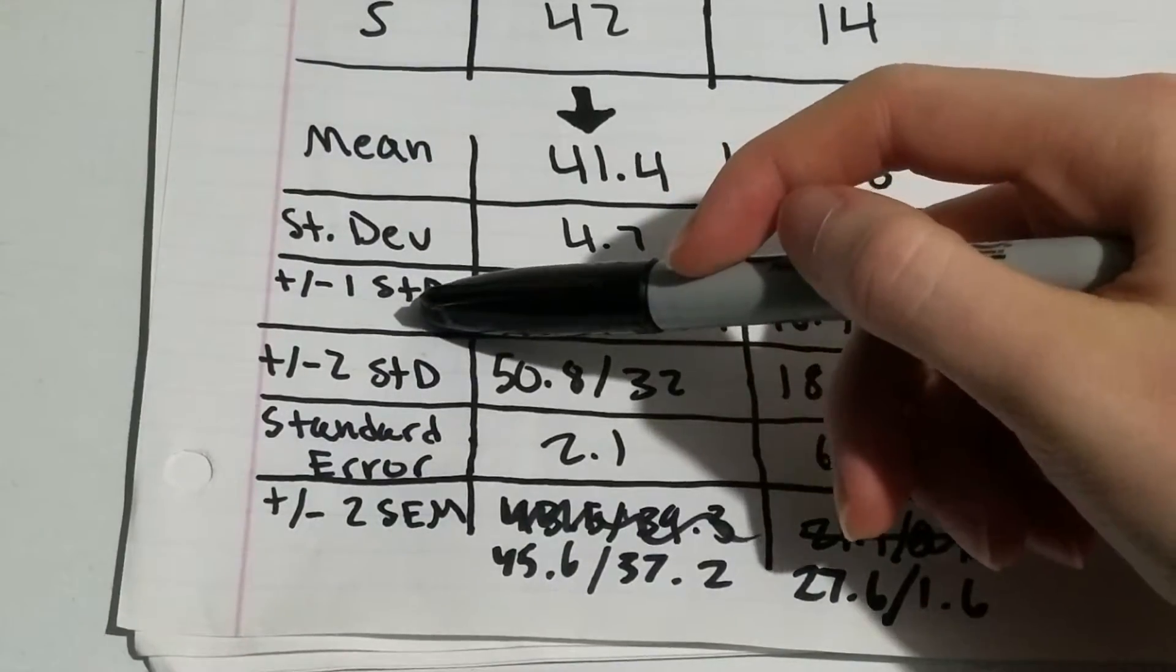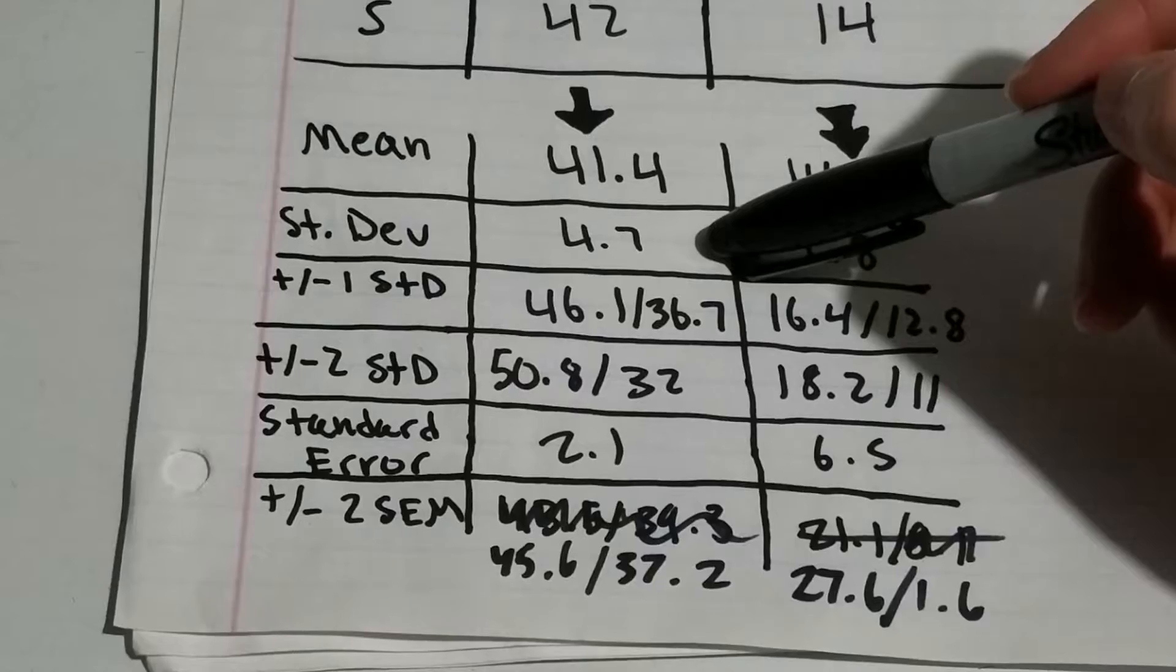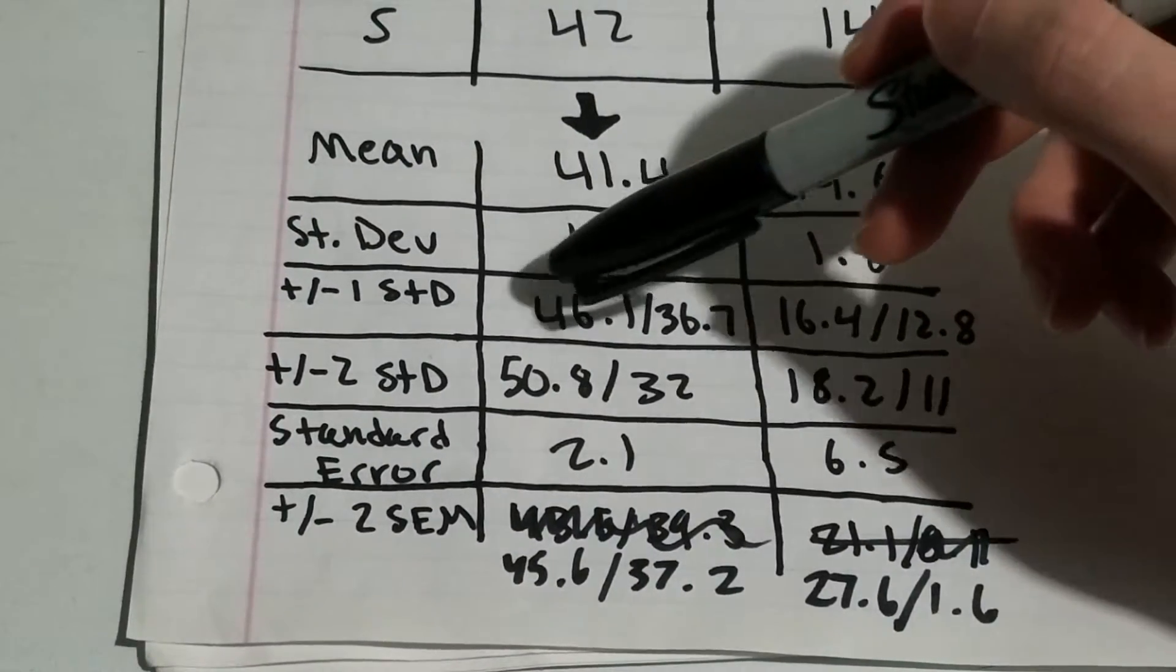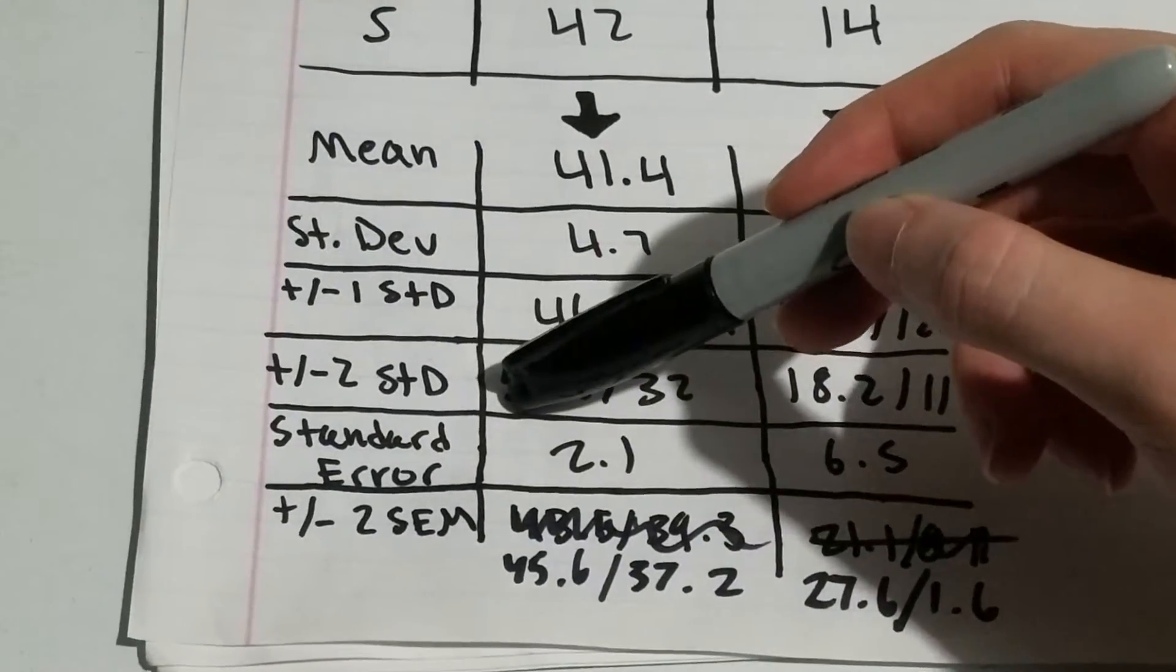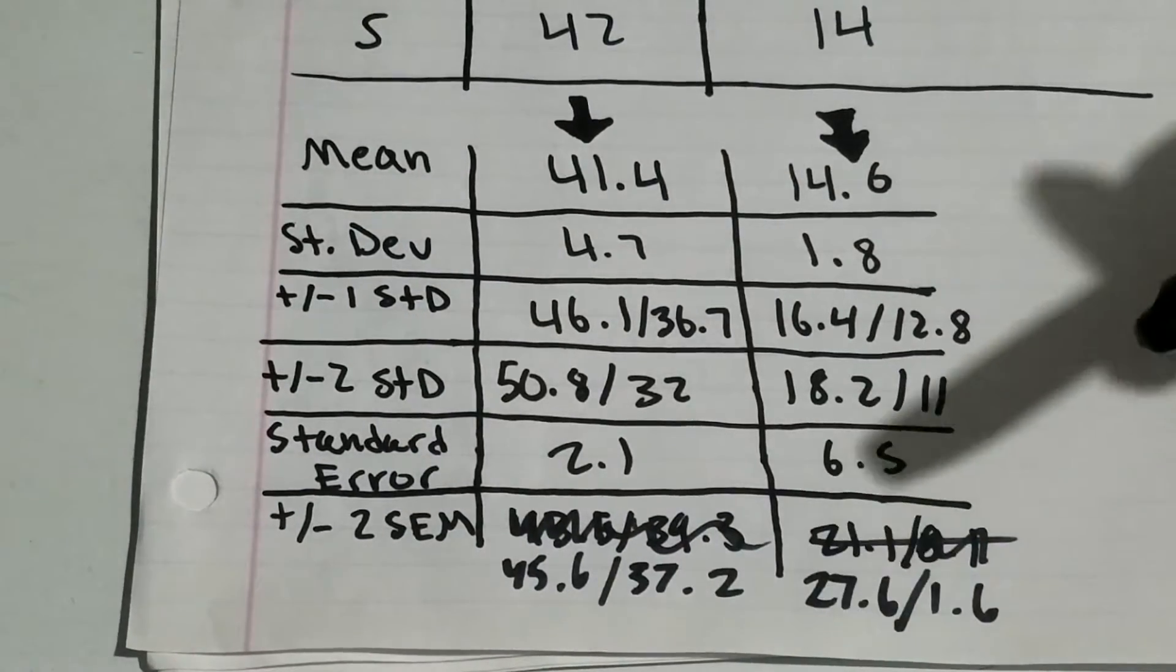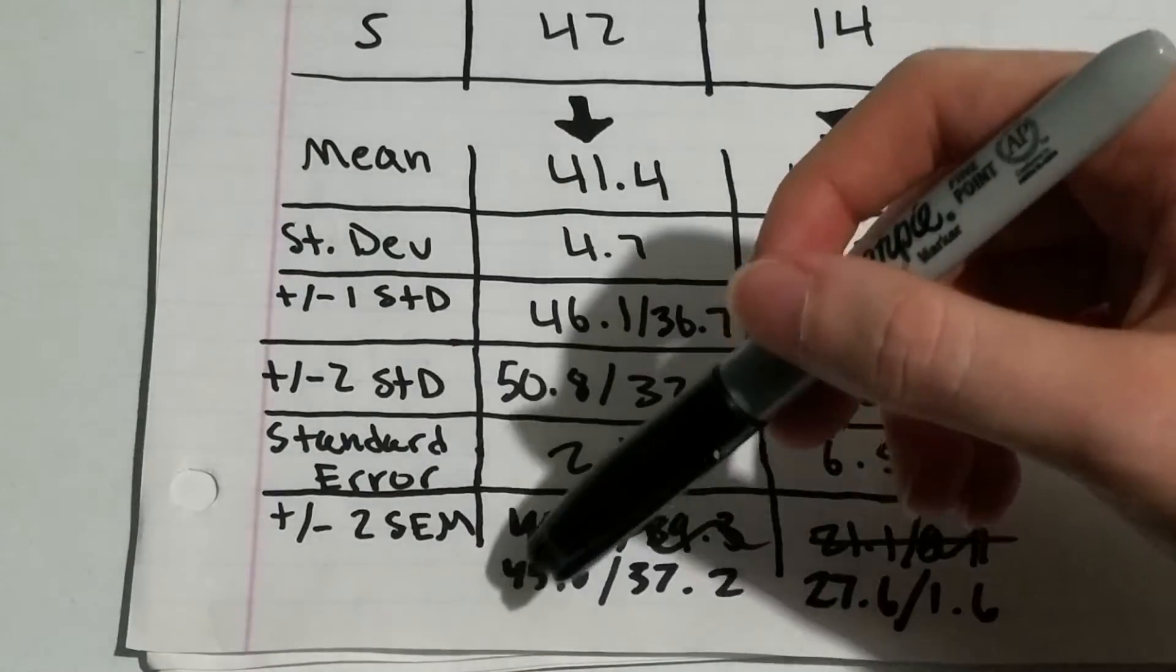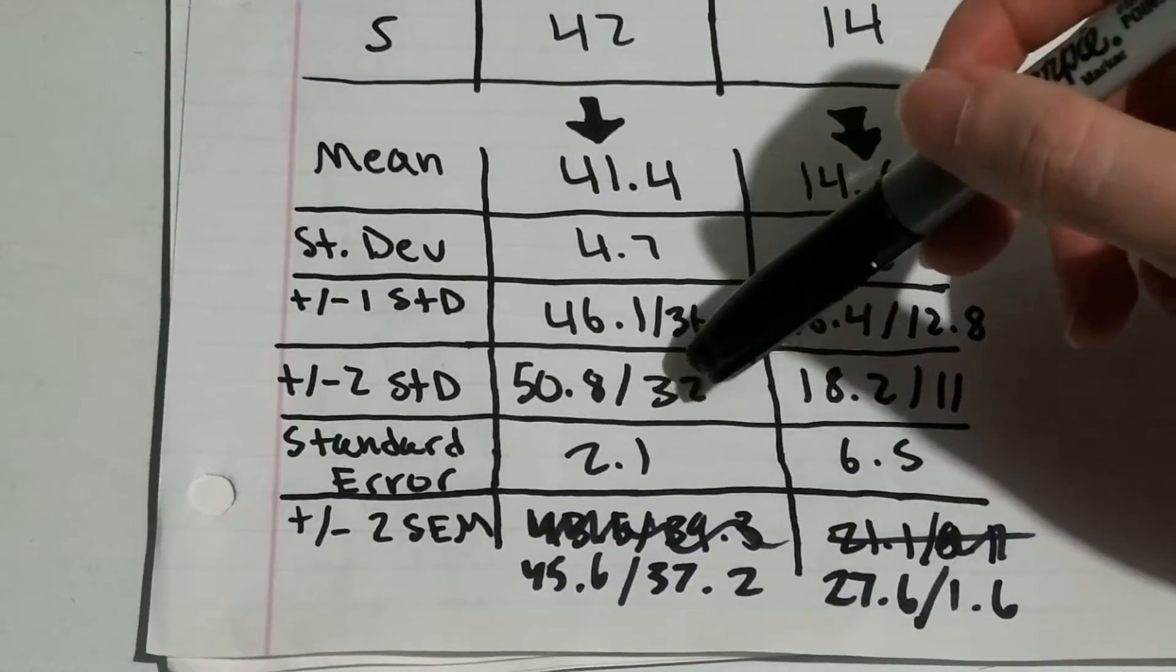To find the plus and minus 1 STD, what you're going to want to do is add your standard deviation to your mean and subtract your standard deviation from your mean to get those two. To find the plus 2 and minus 2 STD, what you're going to want to do is times your standard deviation by 2, and then once you get that, you can then add it to your mean to get the first one and subtract it from your mean to get your second one.